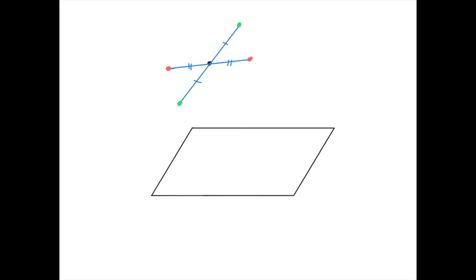We'll see how parallelograms are actually tightly connected with another type of symmetry called point symmetry, or central symmetry, or point reflection. These terms all refer to the same kind of thing in which you have a point — for example this point — which is the center of reflection, and then you just reflect all points with respect to this point.